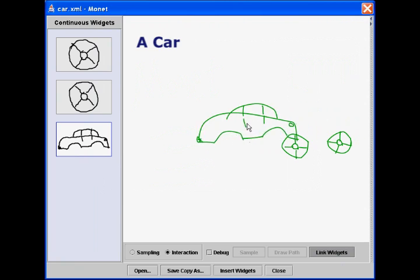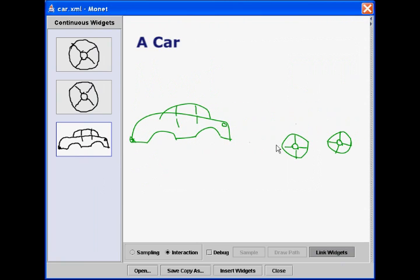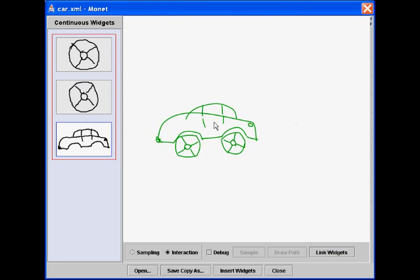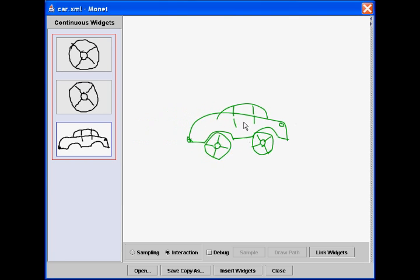In addition to user interface widgets, Monet allows creating some interesting examples which could be useful for demonstrational purposes. The two wheels and the body of a car are prototyped as three continuous widgets, and they are linked to perform a compound behavior. The wheels rotate and translate when the car moves forward or backwards.